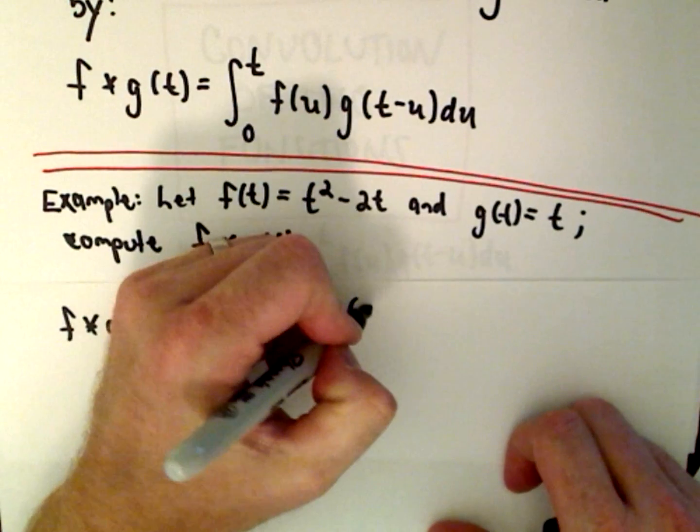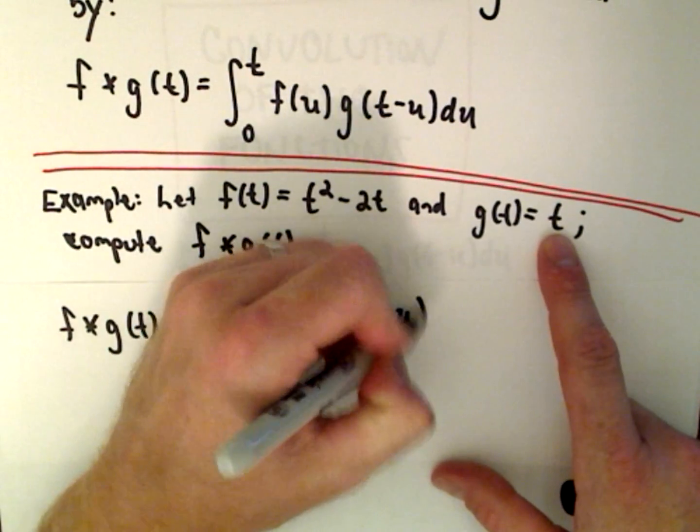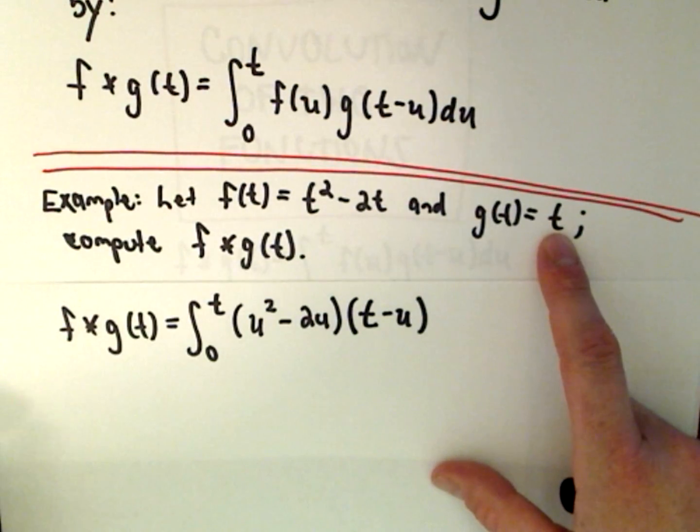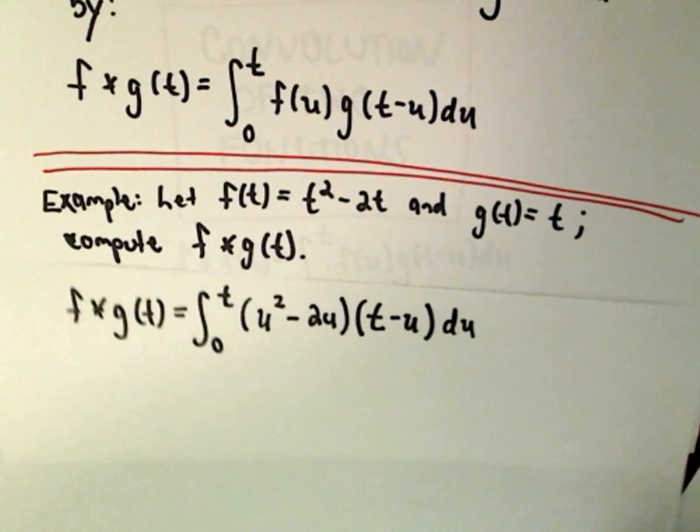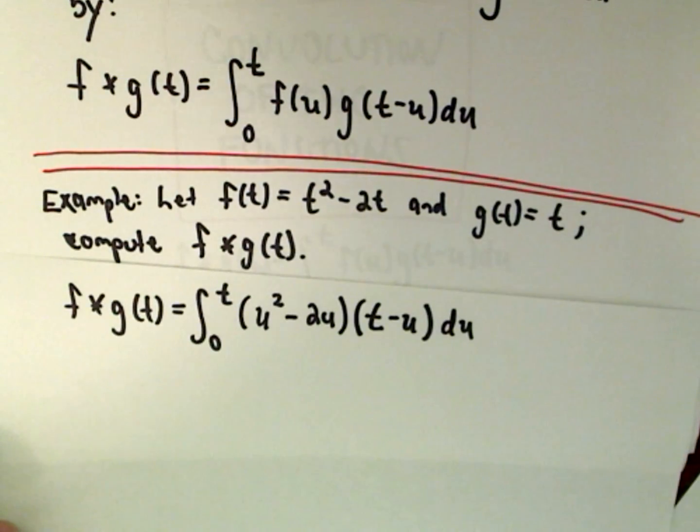I'm going to replace everywhere I have a t, I'm going to replace it with t minus u. And now we're simply going to integrate that with respect to u. Again, a very basic example in this case.